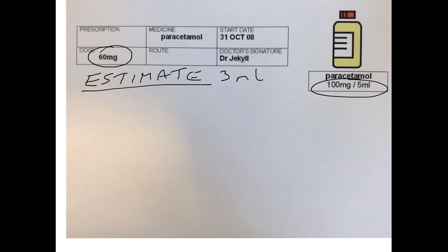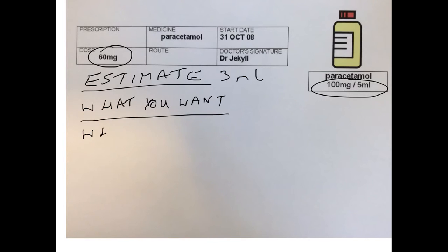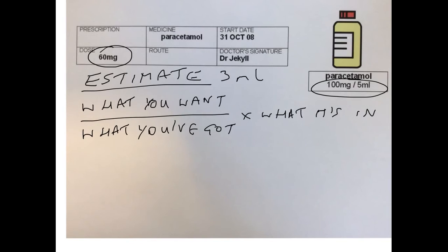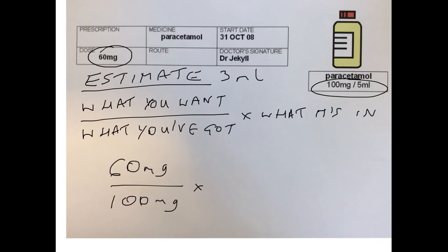Now let's do the calculation. We use the formula: what you want over what you've got, times what it's in. So what you want is from the prescription — 60mg — divided by what you've got, which is 100mg, times what it's in, which is 5ml. Doing that calculation gives you an answer of 3ml of liquid.